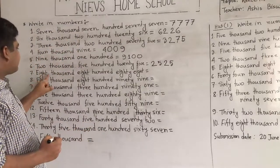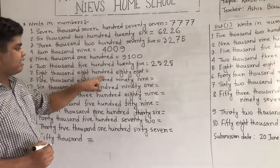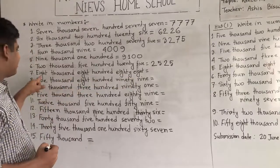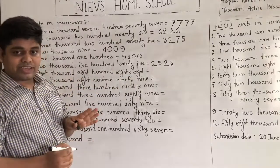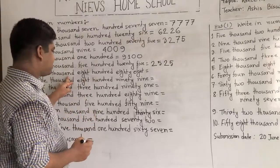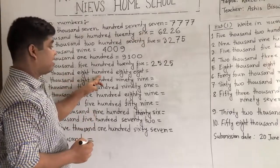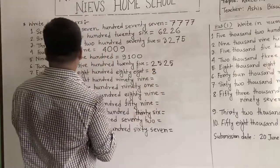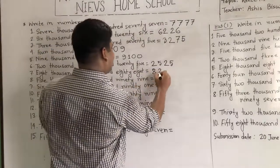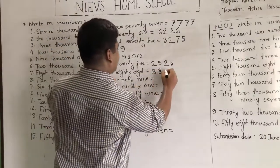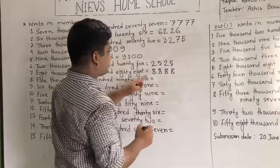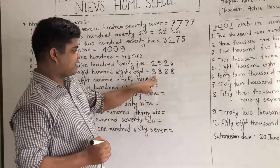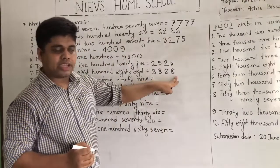Next, 8,888 — another interesting number. We write 8 first as 8,000, then 8 as 800, then 88. So there are four 8s. This is interesting, I think. So we write 8,888.